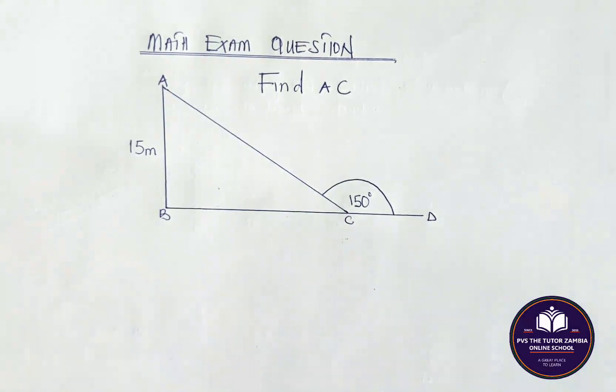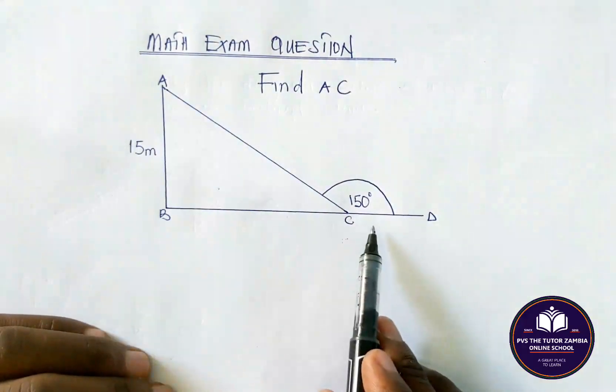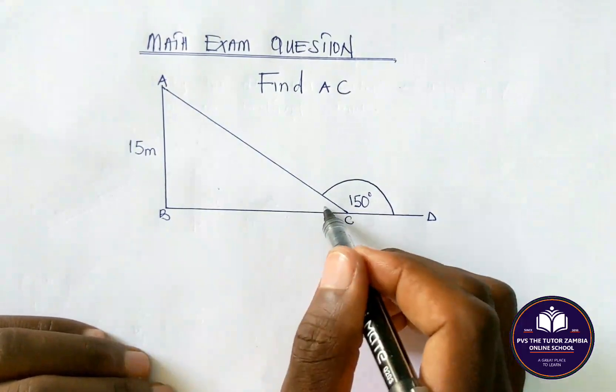So we can label this. For us to find AC, which is the longest part, we first have to know this angle.